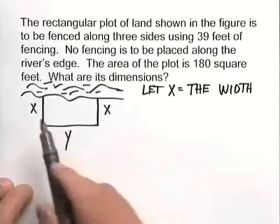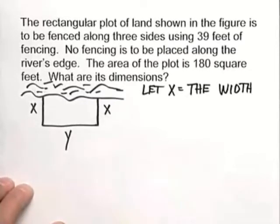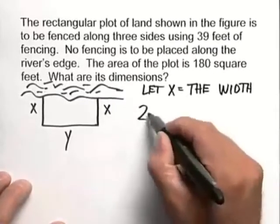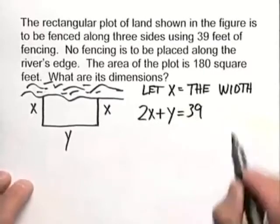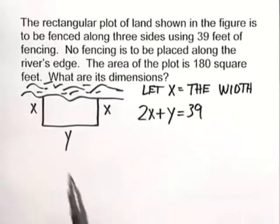So this is a semi-perimeter problem, but knowing that we're not going along the river, we can say that 2x plus y has to equal 39. That gives us the amount of fencing we're going to need to fence off this corral.